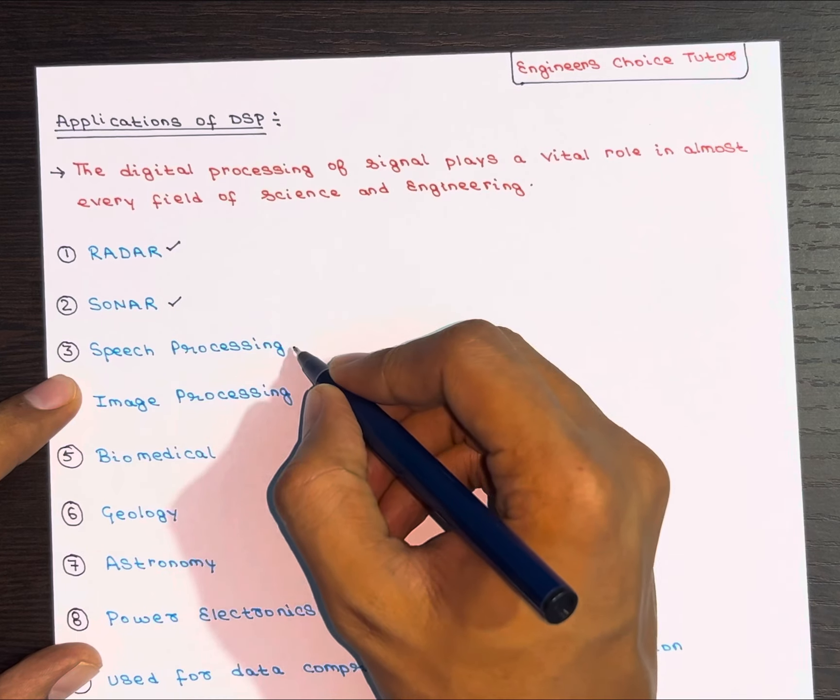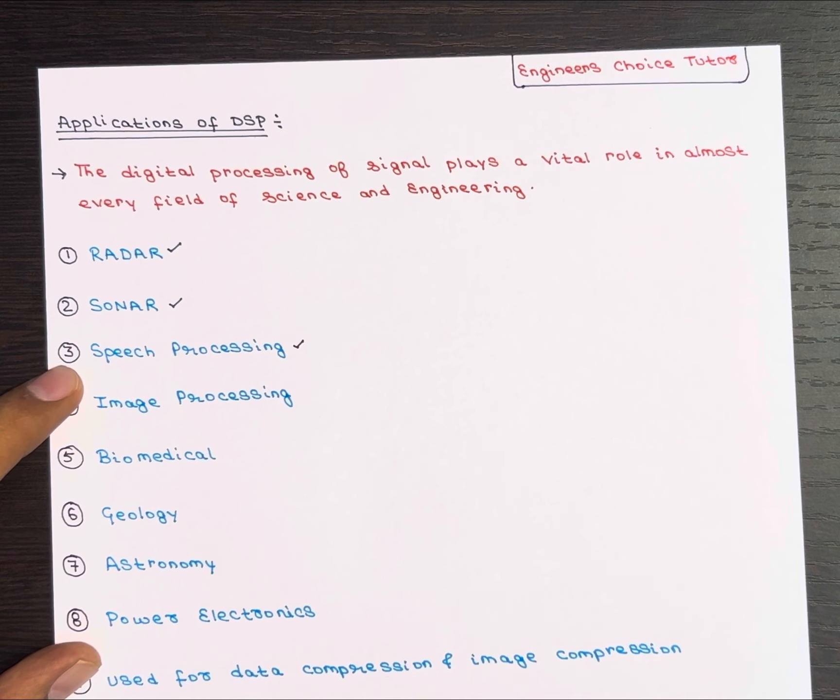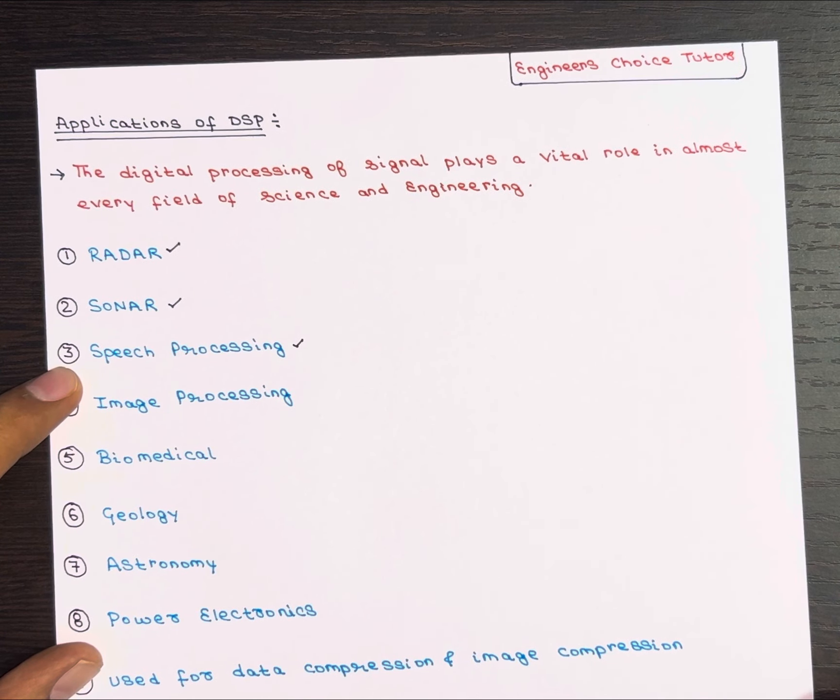Next is speech processing. This is where things get really interesting. Digital processing is used for speech compression and decompression, making it easier to store and transmit speech. It's also used for speech recognition, like converting voice to text or operating voice-based security systems.